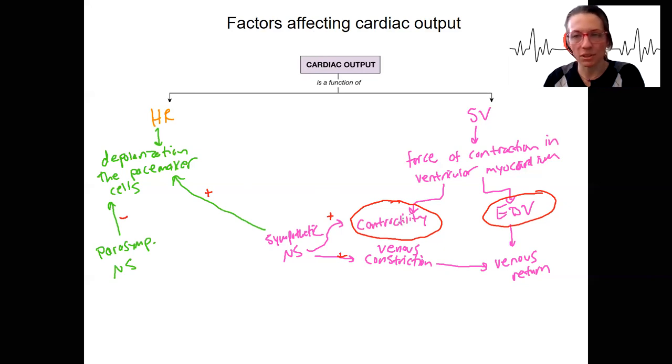So we are going to come back to all these mechanisms, but this is an overview. We're going to look at the regulation of heart rate by altering depolarization rates by the autonomic nervous system. We're going to look at regulation of stroke volume by changing contractility of that myocardium as well as the volume that is in the ventricle.